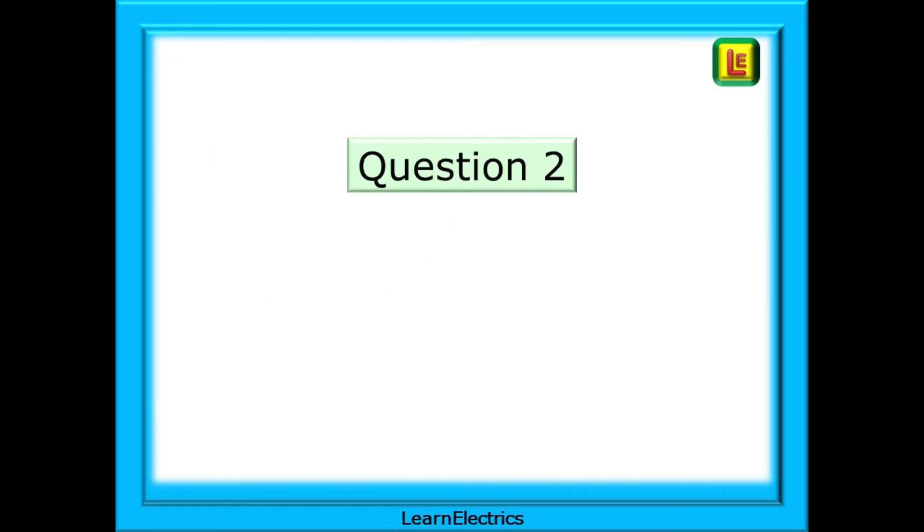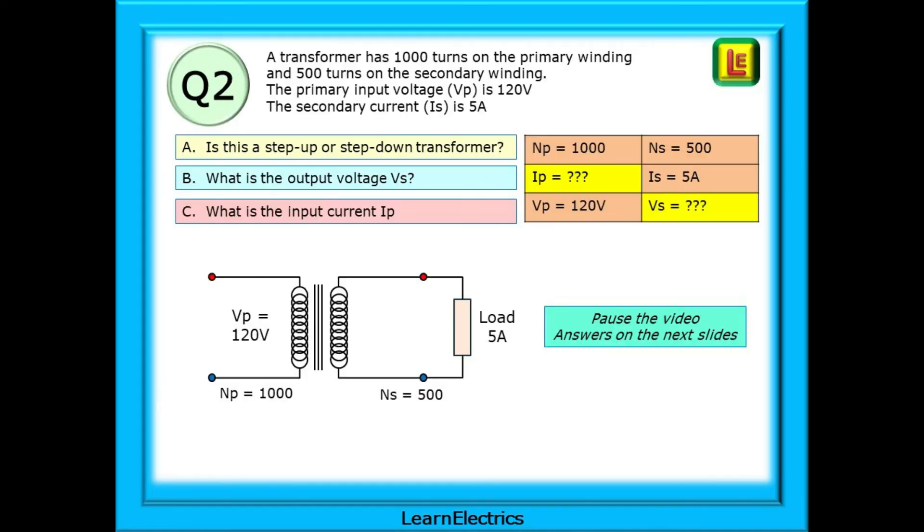On to question 2 now. Again, pause the video after reading the question. Make your own notes, drawings, table or whatever and attempt an answer yourself. The question tells us that a transformer has 1000 turns on the primary winding and 500 turns on the secondary winding. The primary input voltage VP is 120 volts and the secondary current IS is 5 amps.